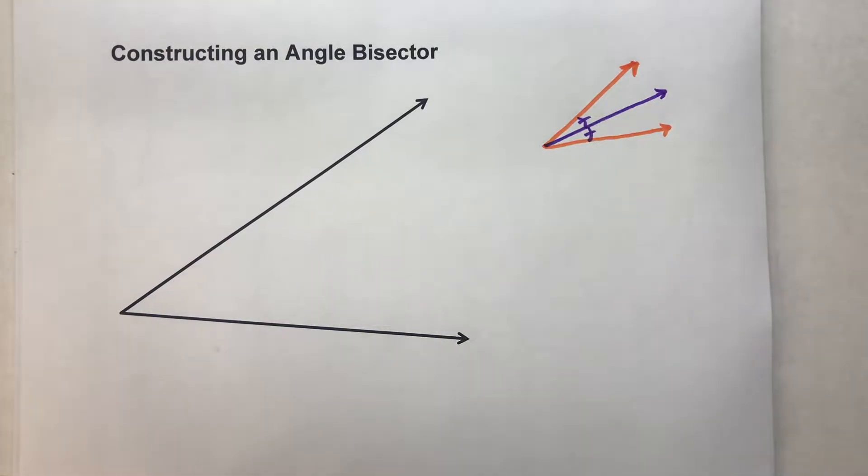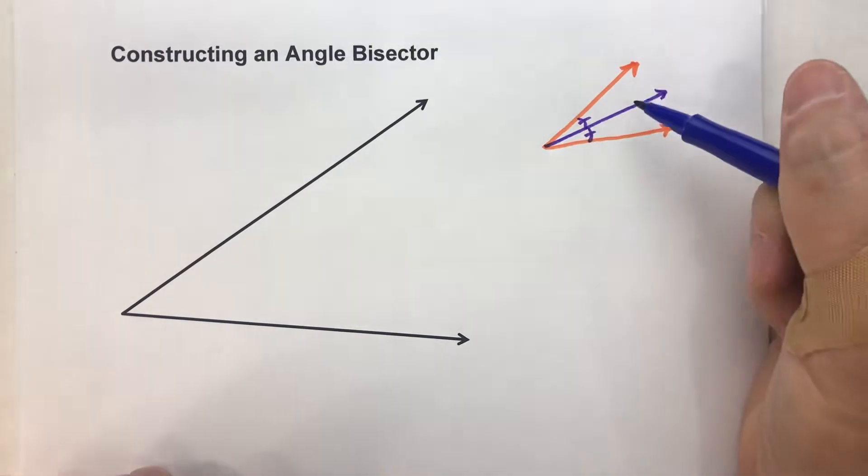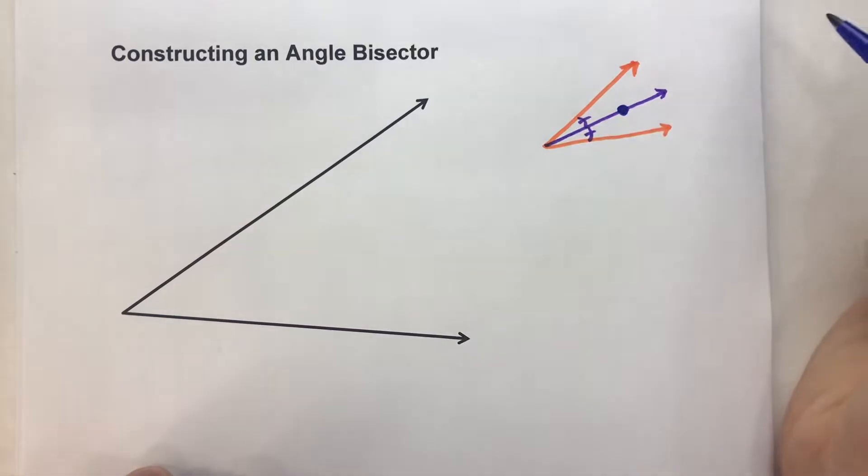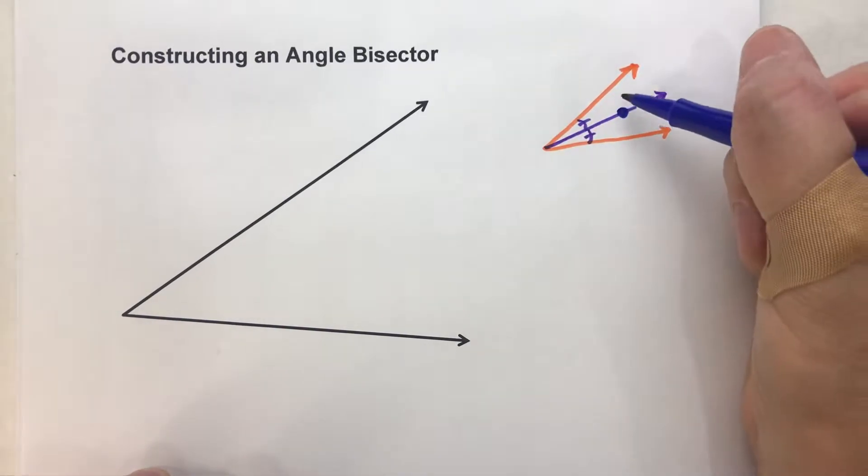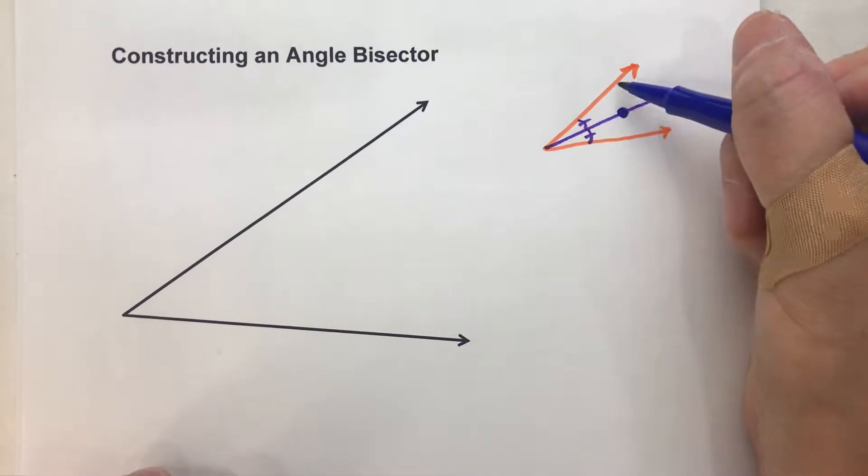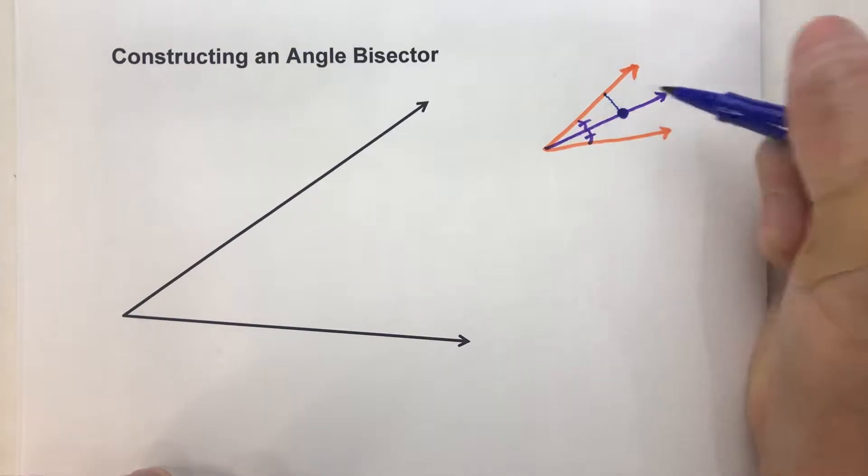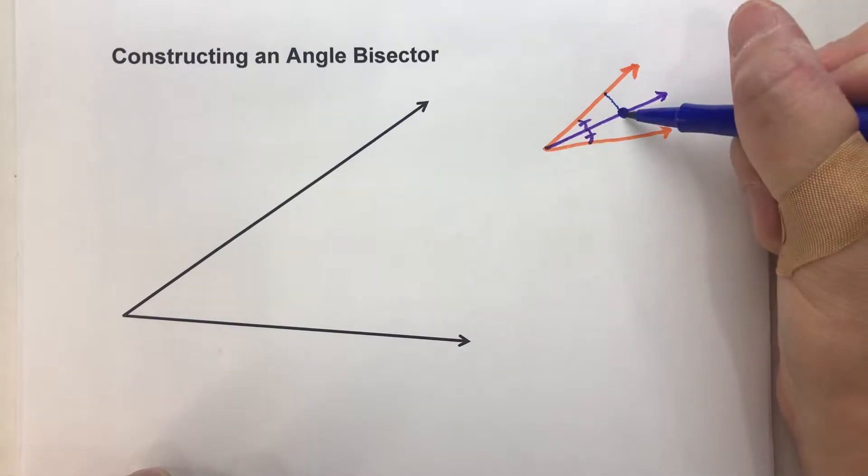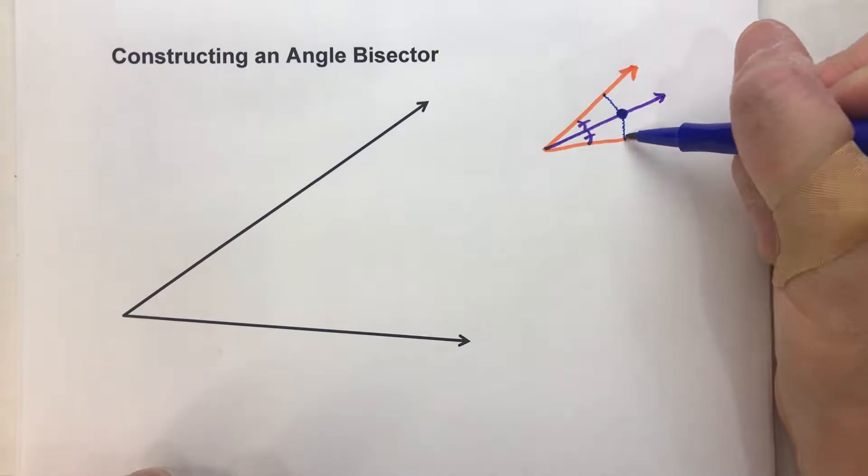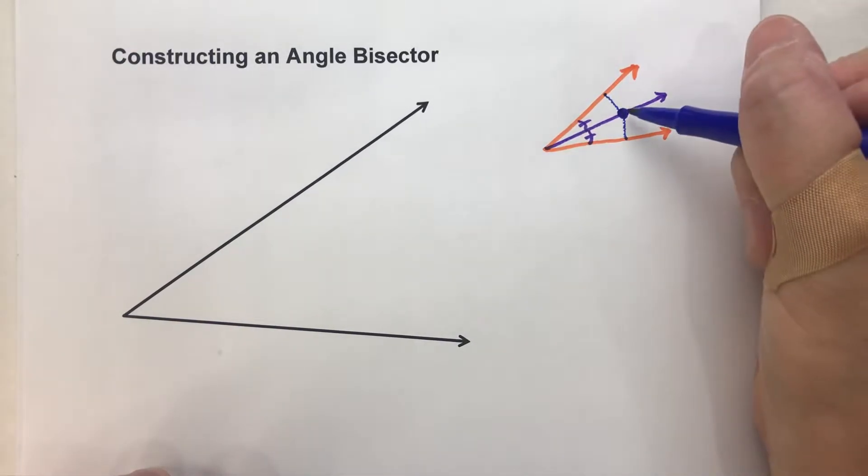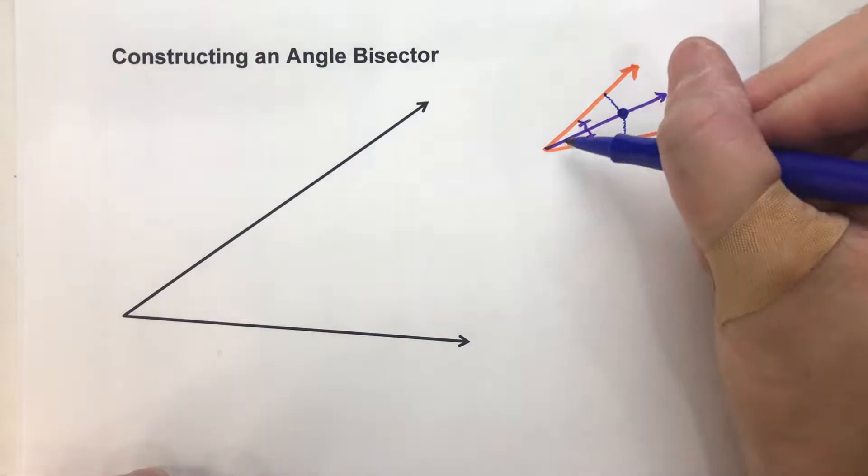Now what we know about angle bisectors is any point on an angle bisector is equidistant from each of the two sides of the angle. So the distance to this side right here is going to be equal to the distance to this side over here. And that goes for any point on the angle bisector.